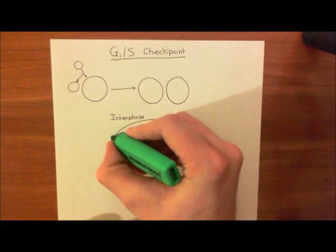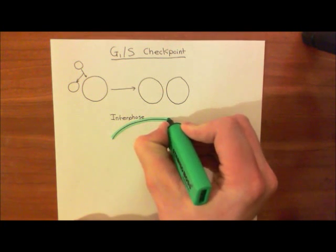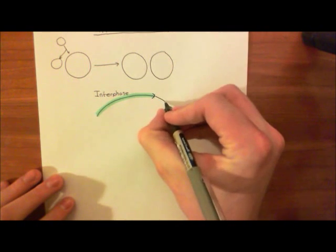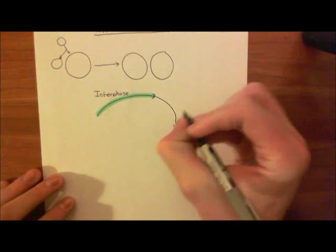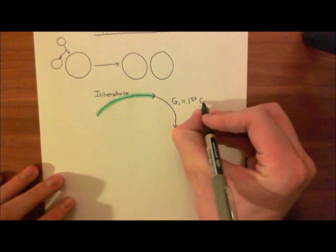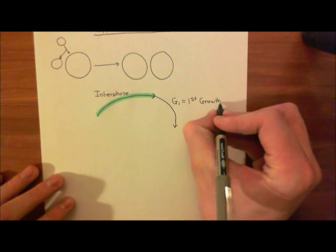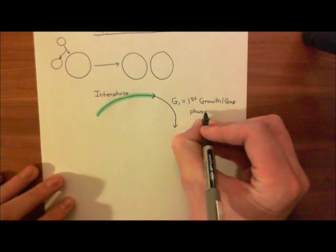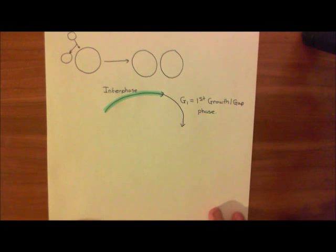When the cell decides that it's ready to divide, then it first enters a stage known as G1. The active portion of the cell cycle starts now. The first portion is G1, and this stands for the first growth or the first gap phase. In this phase, what the cell is doing is it's making a whole bunch of proteins, and it's also getting ready to replicate the DNA. We're going to study that getting ready, what I mean by getting ready to replicate the DNA, in quite some detail.